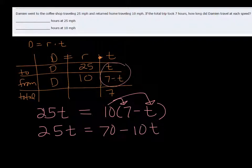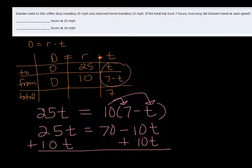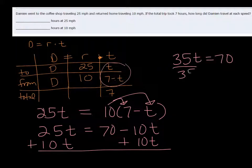And then we can add 10T to both sides. And that gives me 35T equals 70. So if we divide both sides by 35, we get that T is two hours.